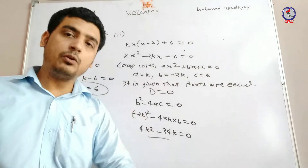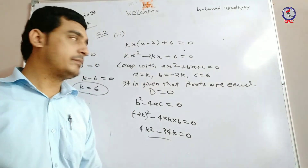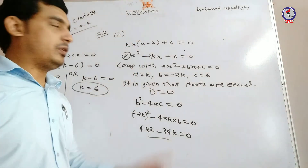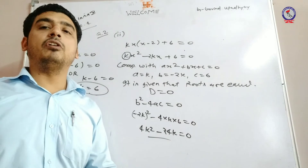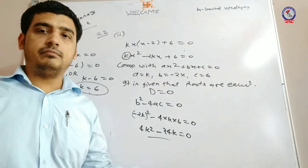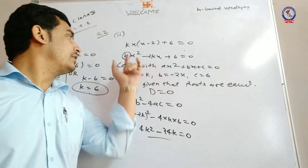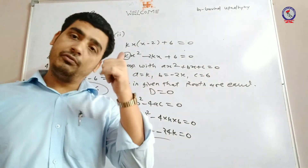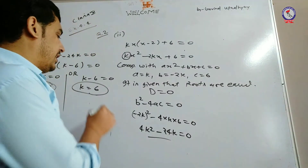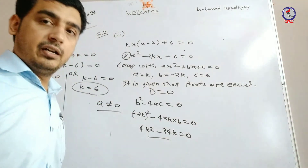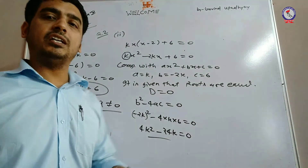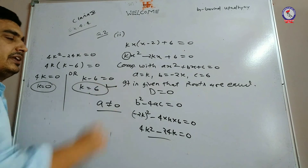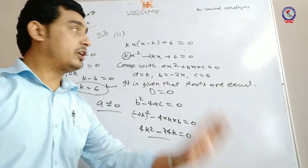अब सोचो क्या k zero हो सकता है? नहीं हो सकता। क्योंकि अगर k zero हुआ तो x squared का coefficient zero होगा, और हमने पहले बोला है कि a does not equal to zero in any condition — अगर यह zero हो जाता है तो हमारी quadratic equation ही नहीं रहती। तो finally, the answer will be k is equal to six.